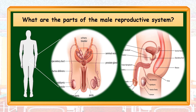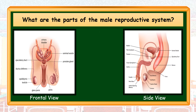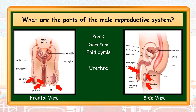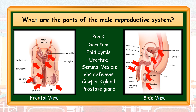This is the male reproductive system. It is located in the middle part of the lower abdomen of a male human body. The different parts of the male reproductive system are penis, scrotum, epididymis, urethra, seminal vesicle, vas deferens, Cowper's gland, and prostate gland. The penis and scrotum are visible externally, while epididymis, urethra, seminal vesicle, vas deferens, Cowper's gland, and prostate gland are located inside the body.